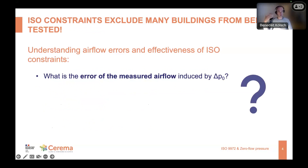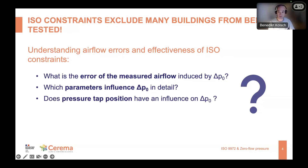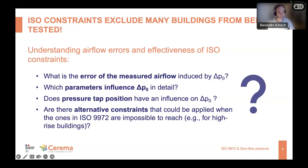I would like to discuss several questions in this presentation to understand the effectiveness of these constraints and how zero flow pressure differences affect the measurement errors of the airflow we measure at the end. The first question is: what is the error of the measured airflow related to this zero flow pressure difference? The second is: which parameters have an influence and how much do they influence the zero flow pressure difference? Does pressure tap position give different results? And might there be possible alternative constraints when those in ISO 9972 are impossible to reach, for example for high-rise buildings?